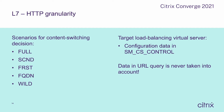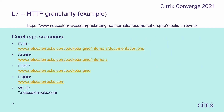How does that translate into a real-life example? Take an HTTP request such as https://www.netscalerlogs.com/packet-engine/internals/documentation.php?section=rewrite. In the five scenarios for layer 7 traffic, the identifiers are: full, second, first, FQDN, and wild. These five scenarios basically cover 80 to 90% of all the traffic decisions I've had to make in my 10-year Citrix ADC career, so it's quite powerful to limit all decision making to those five scenarios.